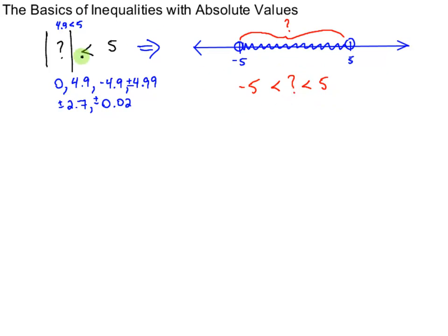If I go back and change this to less than or equal to 5, all that means is that the thing inside — question mark — could literally equal negative 5 or positive 5 as well. So I would simply adjust for that equals. Let's try another one.